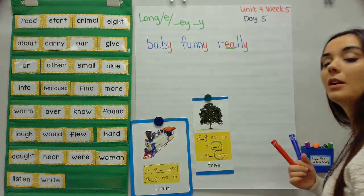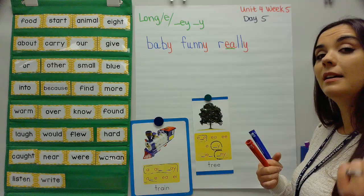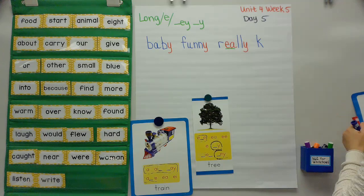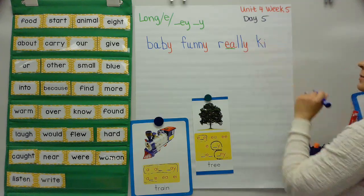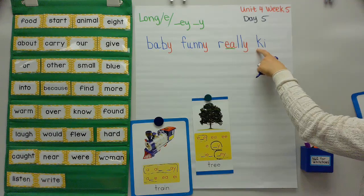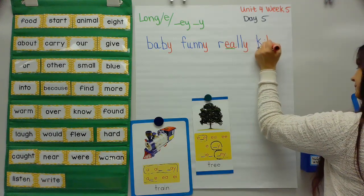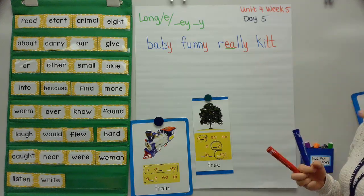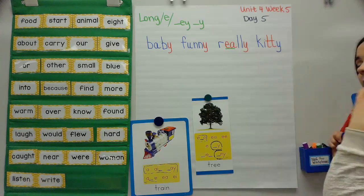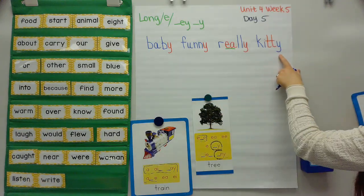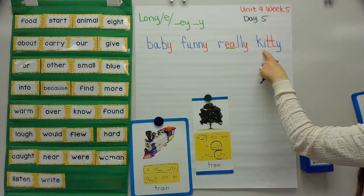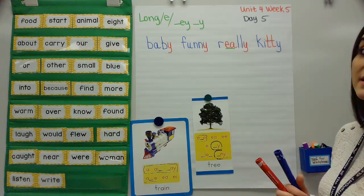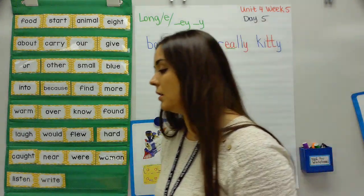Next word: kitty. Your turn. Kuh - I - Tuh - E. Kitty. Kitty cat! K says Kuh. And in this word kitty, the I is a short I. Kuh - I. And then another one where we double up on that consonant — T says Tuh. And when we say kitty, we hear long E at the end. So that long E is spelled with Y. Kuh - I - Tuh - E — kitty. This may be a word that you've seen so many times that you don't have to sound out and you just already know it.